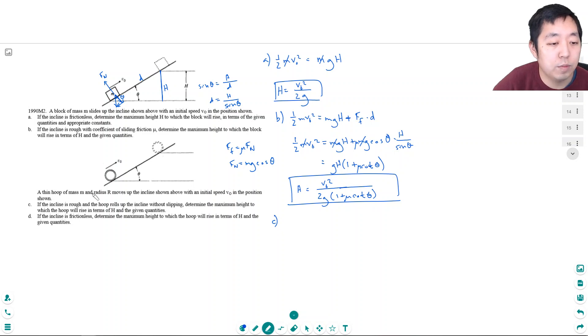A thin hoop of mass m and radius r moves up the incline with the initial speed v not in the position shown. If the incline is rough and the hoop rolls up the incline without slipping, determine the maximum height to which the hoop will rise in terms of h given the quantities above.